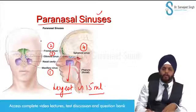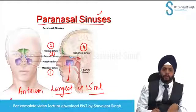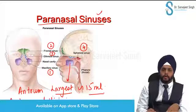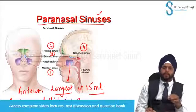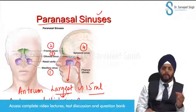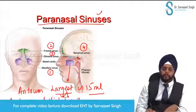We also call it the antrum of Highmore. You can remember it this way: it is the largest paranasal sinus, so 'high and more' — antrum of Highmore, largest paranasal sinus.